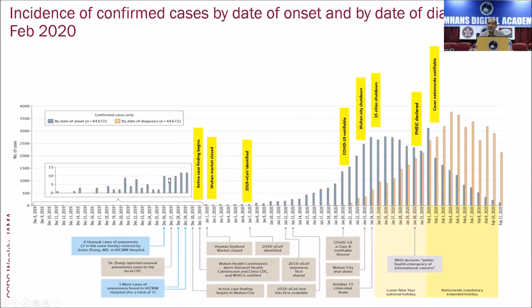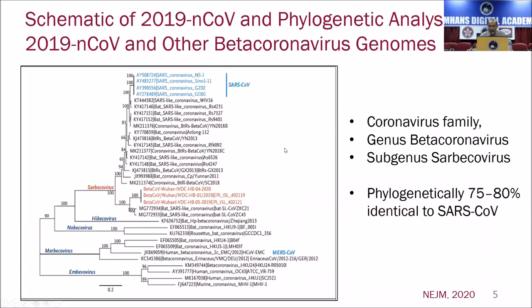China announced they had a new coronavirus infection, and by the 7th the virus was completely sequenced. This is the epidemic curve. Starting from December, initial cases trickled in up to the 31st. From around January 7th, the outbreak started increasing and reached a peak by the end of January 2020. By January 25th, WHO declared it a global public health infection of international concern, and much later called it a pandemic. The blue bars are cases reported by date and the orange bars are when they were confirmed as coronavirus infection.